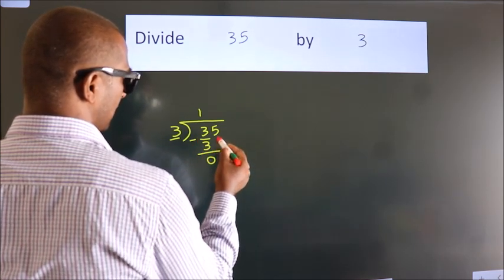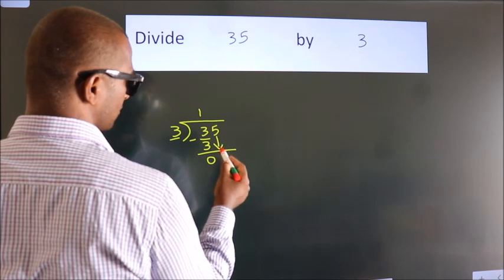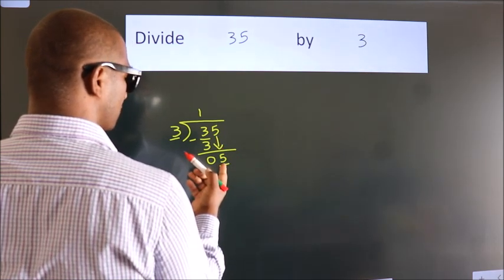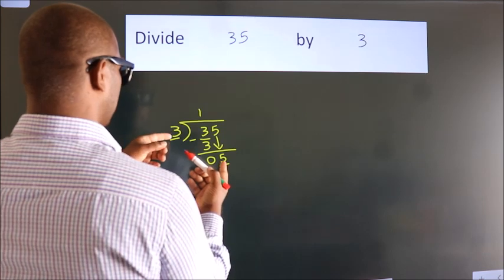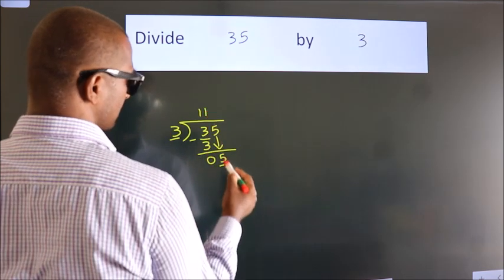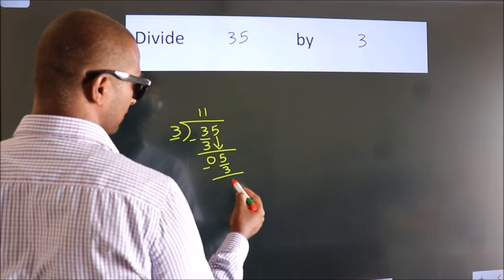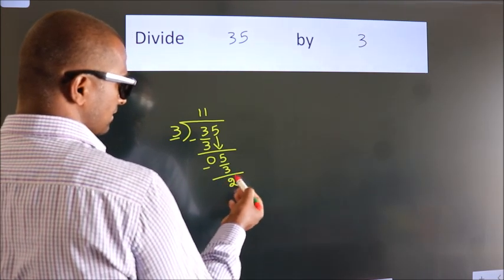After this, bring down the next number, which is 5. A number close to 5 in the 3 times table is 3 times 1, which is 3. Now we subtract. We get 2. After this,